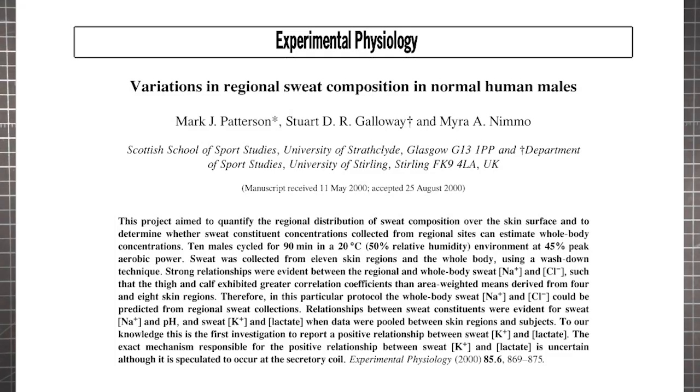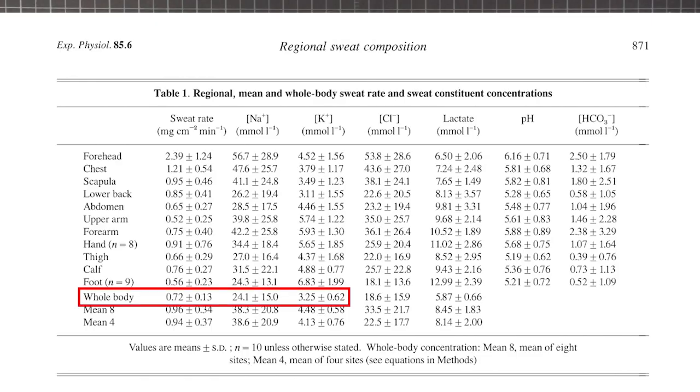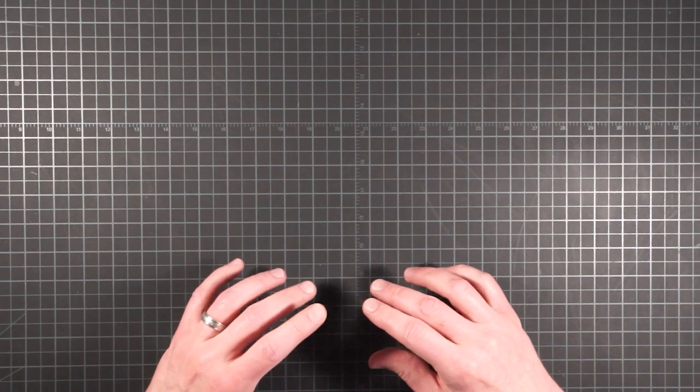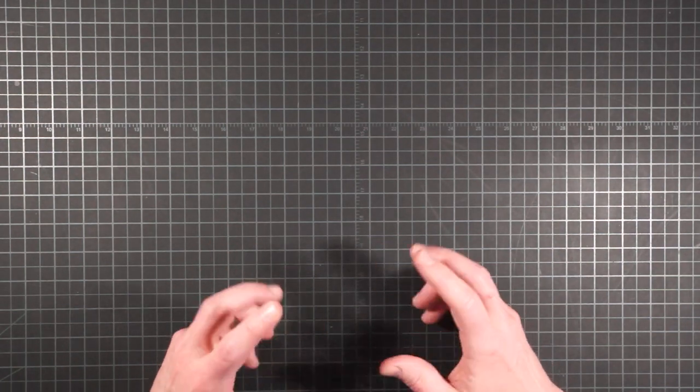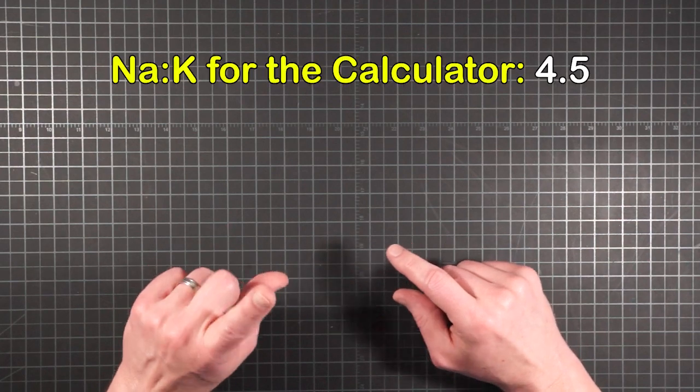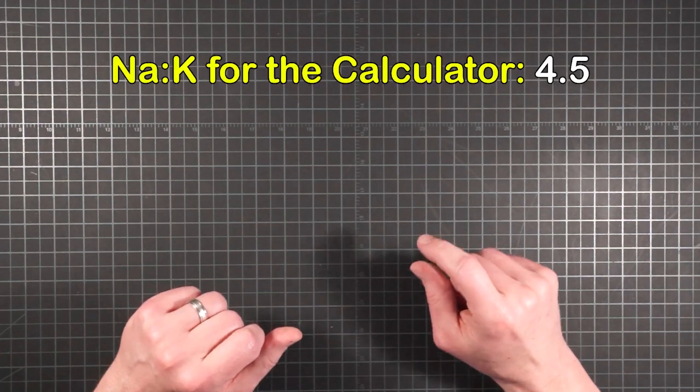This study, using 10 male subjects, did identify 45% peak aerobic power, which is just what I've been using as an estimate for hiking. Their findings for the whole-body sweat ratio of sodium to potassium works out to 4.36 to 1. That's within the range of what was found in the soccer study, and since it specifically mentions 45% effort, I decided to round it off and use 4.5 to 1 for my NAC calculator.